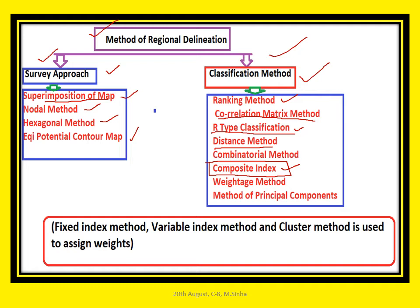The weightage method uses the weightage or importance of variables — researchers or planners rank variables, apply weightage, prepare an index, and delineate a region. The last method is the principal component method, applicable for research at small and large area scales, used when variables number more than two or three. Fixed index methods, variable index methods, and cluster methods within the weightage index are widely used for both small and large area delineation.